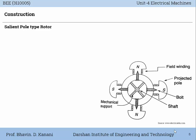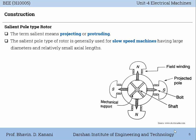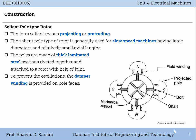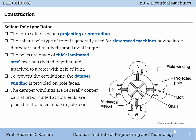Now the construction of the salient pole type rotor is very well explained by this diagram. The term salient means projecting or protruding. The salient pole type of rotor is generally used for slow speed machines having large diameters and relatively small axial lengths. The poles are made of thick laminated steel sections riveted together and attached to a rotor with the help of a joint. To prevent oscillations, the damper winding is provided on the pole faces. The damper windings are generally copper bars short circuited at both ends, placed in holes made in the pole axis.